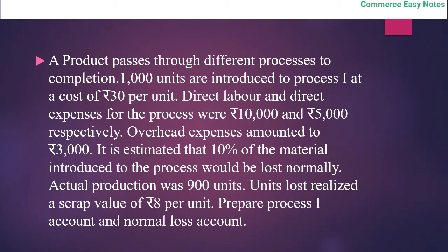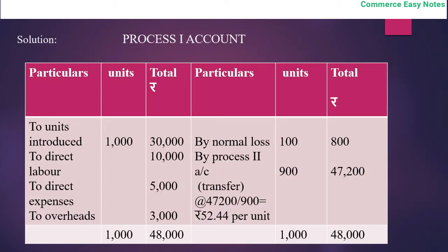Now we prepare process 1 account with debit and credit sides, each having a units column and a total column. On the debit side: 1,000 units of material at Rs. 30 = Rs. 30,000; direct labour Rs. 10,000; direct expenses Rs. 5,000; overhead Rs. 3,000. On the credit side, normal loss is 100 units with scrap value of Rs. 800 (100 × 8).